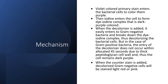What happens to gram positive bacteria? Within the allotted time of 45 seconds to one minute, there is not enough time for the decolorizer to enter the gram positive bacteria, because gram positive bacteria have a thick cell wall. The 45 seconds to one minute is not enough for the decolorizer to enter and decolorize gram positive bacteria, so they remain purple.